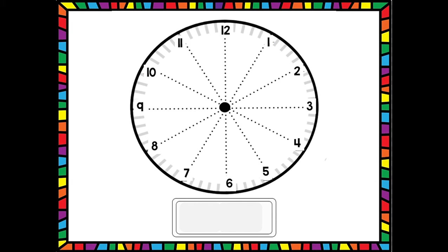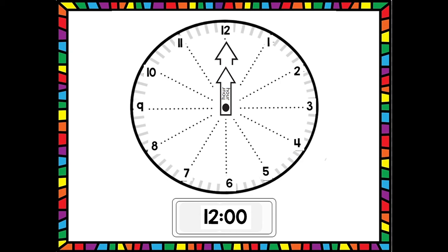Let's do another. What time does this clock want us to show? This clock would like for us to show twelve o'clock. So where should our minute hand be facing? That's right — it's always going to be on that twelve for o'clock. But where is the hour hand going to be? The hour hand is also going to be facing the twelve to show twelve o'clock. The minute and hour hand are on top of each other to show twelve o'clock.